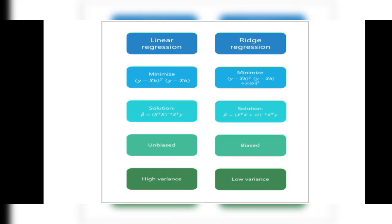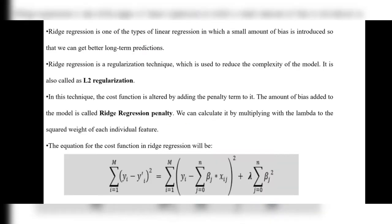Linear regression has high variance and ridge regression has low variance. Ridge regression is one type of linear regression in which a small amount of bias is introduced so that we can get better long-term predictions — it introduces only a small amount of bias.